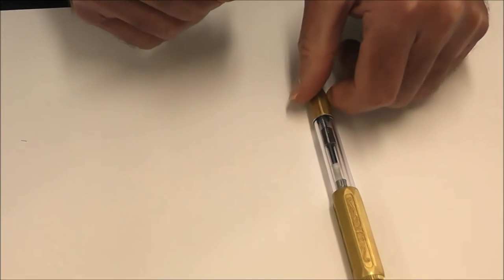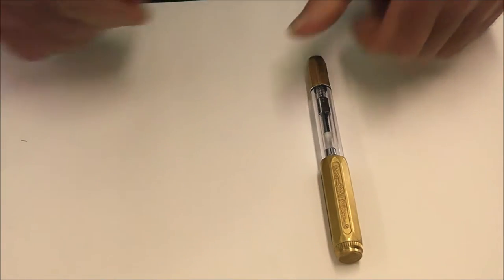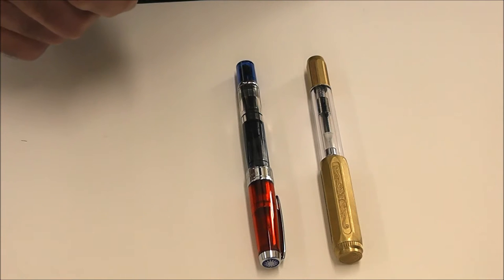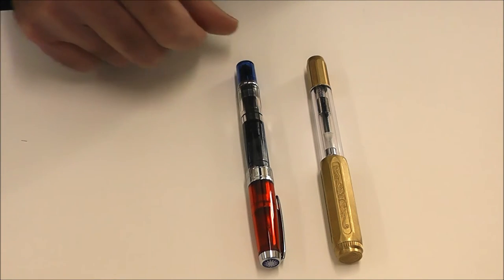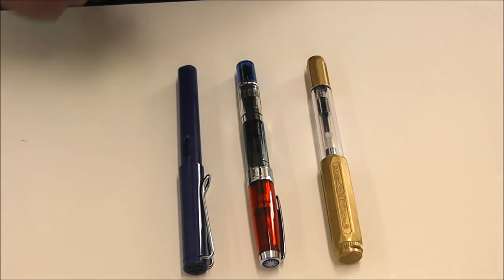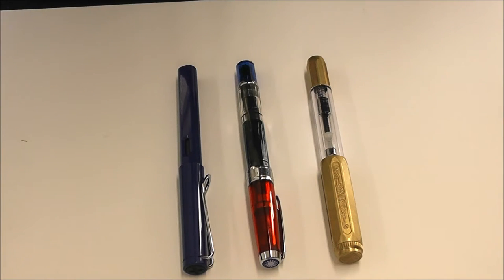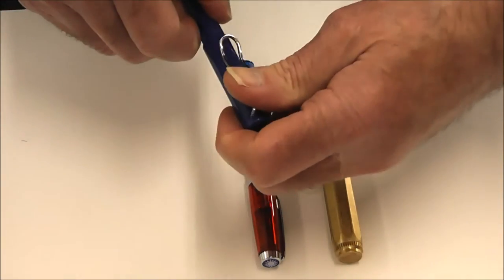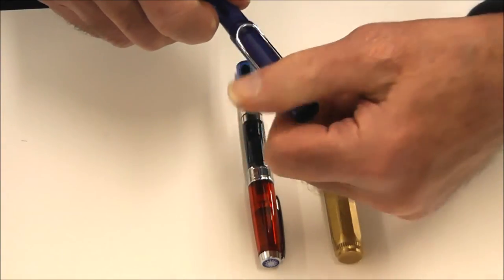So there we go. This is a Twsbi 580. So we'll see it's almost exactly the same length and so forth. And this is an old favourite, a Lamy Safari. Now in terms of length, there's not a lot in it. I would say the Safari is slightly thinner.